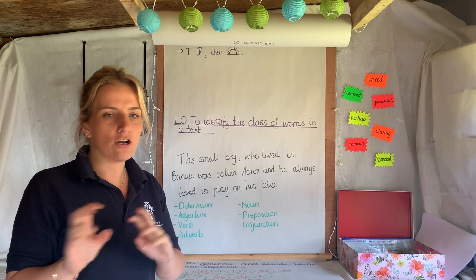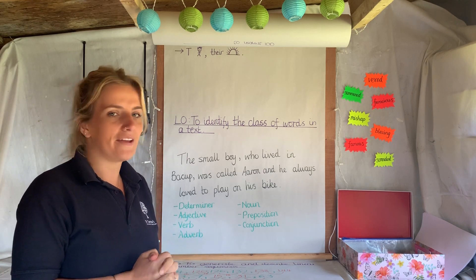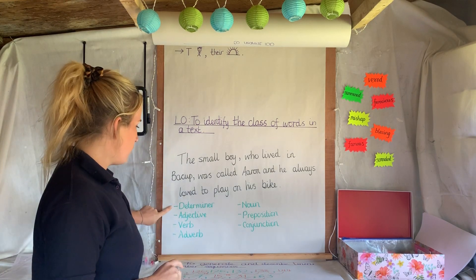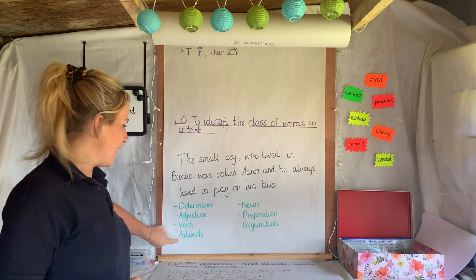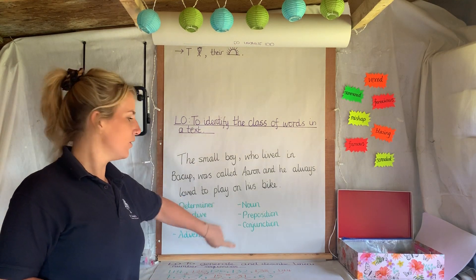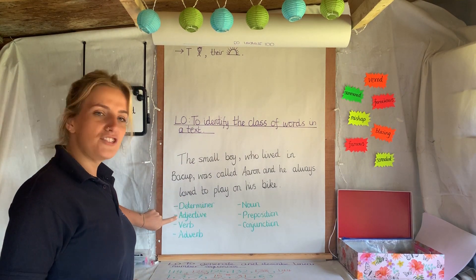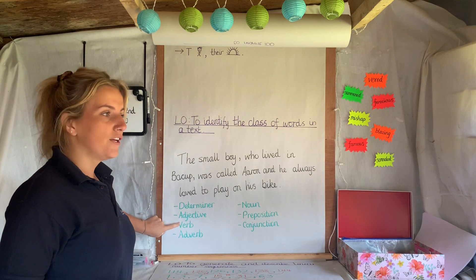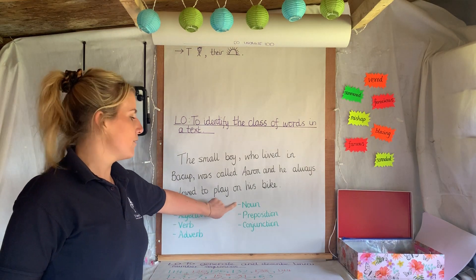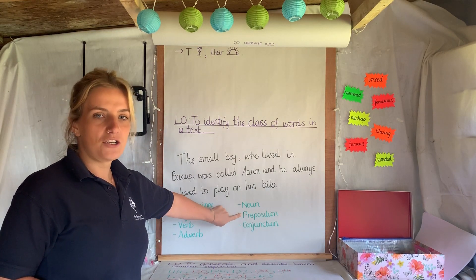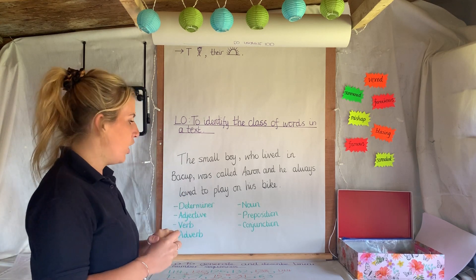Some of them do split up, but we'll go into a little bit more detail about that in a second. So the seven main word classes, just to remind you, I have written on the board. We've got a determiner, an adjective, verb, an adverb, a noun, a preposition, and finally a conjunction.